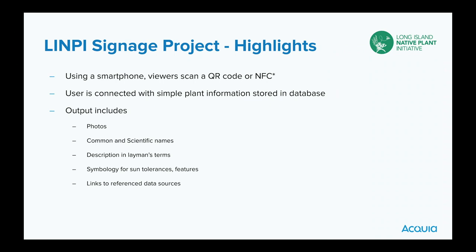The outputs: photos — before there was only one, now we have multiple. Common and scientific names — scientific names are important because common names are often misleading. For example, Montauk daisy is actually invasive from Japan, nothing to do with Montauk. I rewrote descriptions to make them accessible and easy. I added symbology for features like deer resistance. Everything is referenceable from other data sources online. I wanted it concise but not replicating existing databases — the primary purpose was signage.